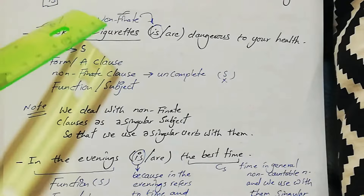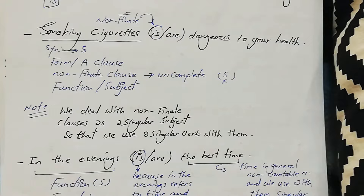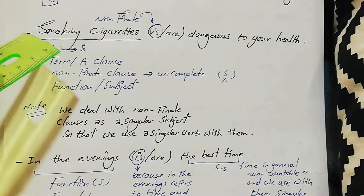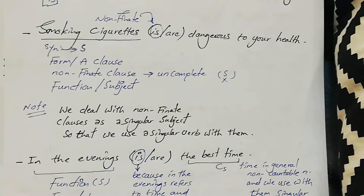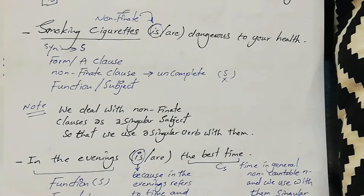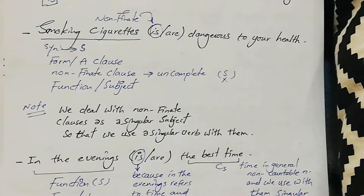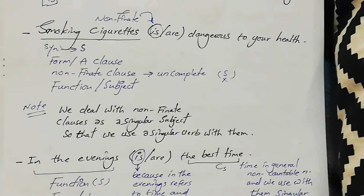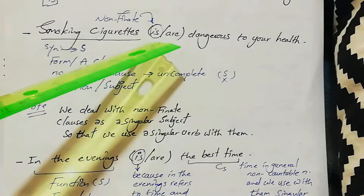'Smoking cigarettes is/are more dangerous to your health.' Smoking cigarettes is syntactically the subject. The form is a clause — a non-finite clause. Why non-finite? Because it is incomplete; there is no subject. Syntactically, the function is a subject. We deal with non-finite clauses as a singular subject, so we have to use a singular verb: 'Smoking cigarettes is dangerous to your health.'